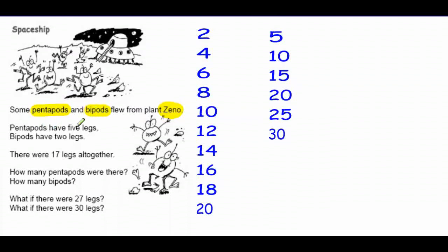The pentapods have five legs and the pipods have two legs. We counted the legs and we found that we have 17 legs all together. Now, I want to find out how many pentapods and how many pipods were there. How can I solve this problem?